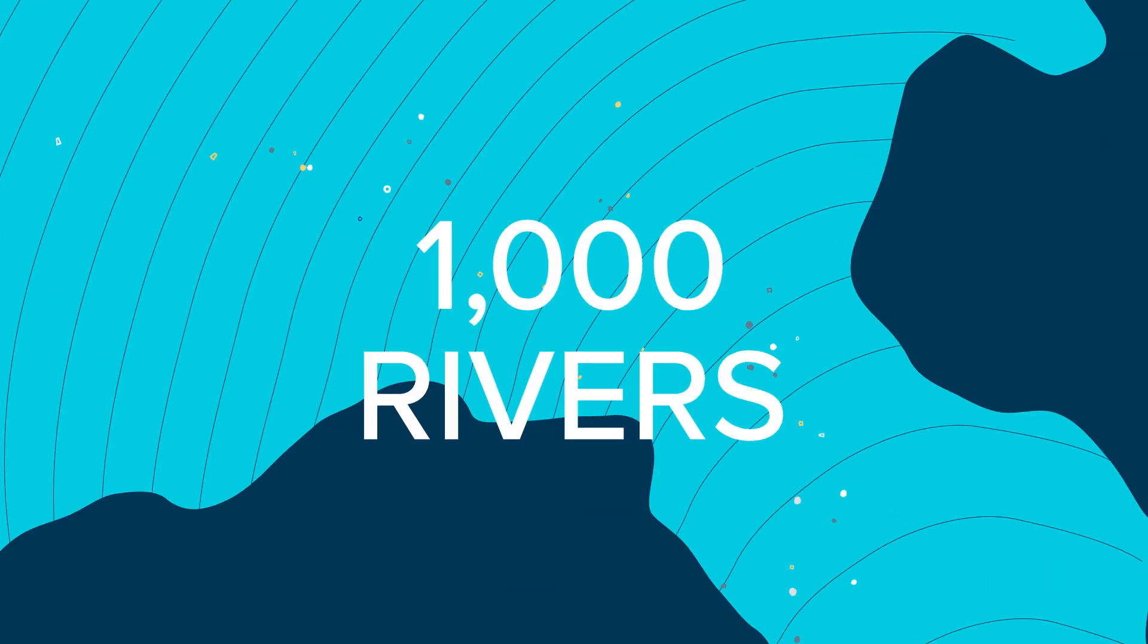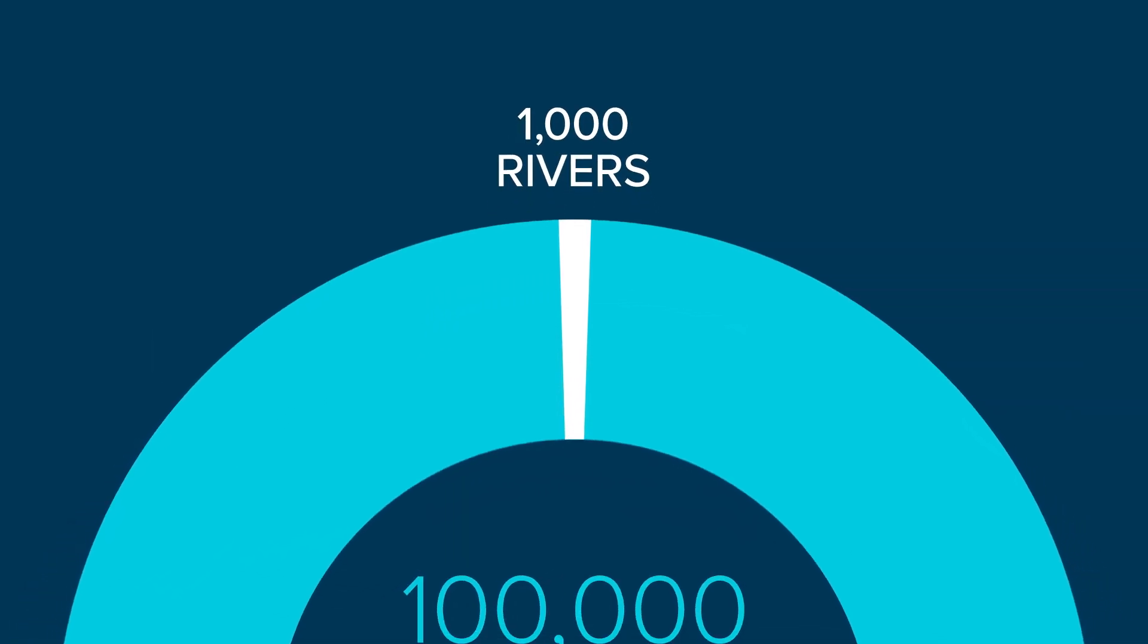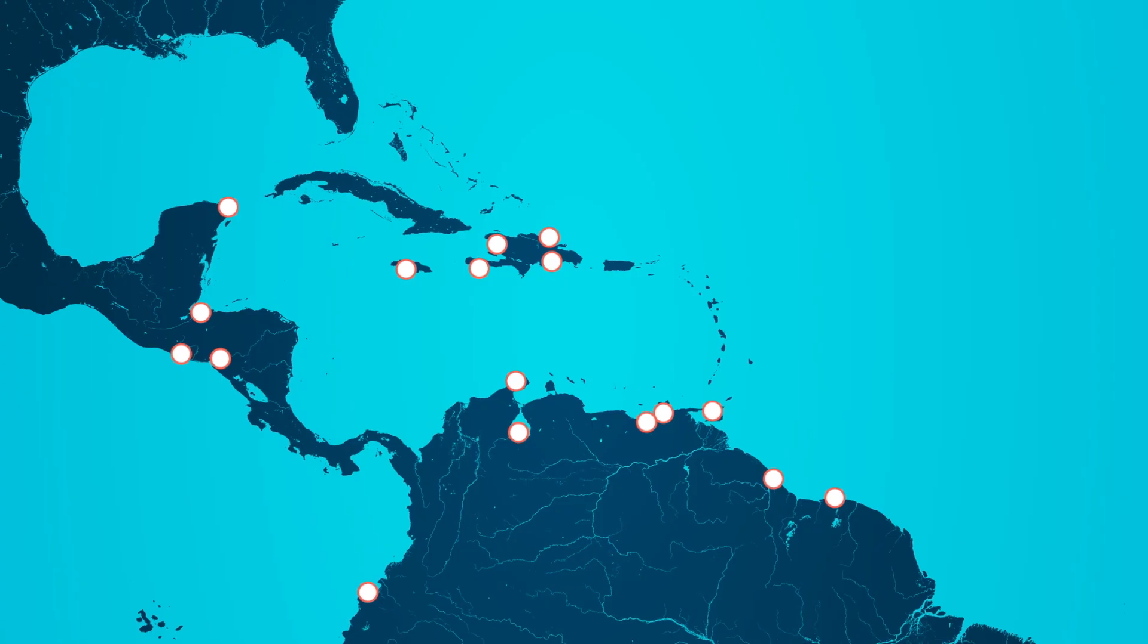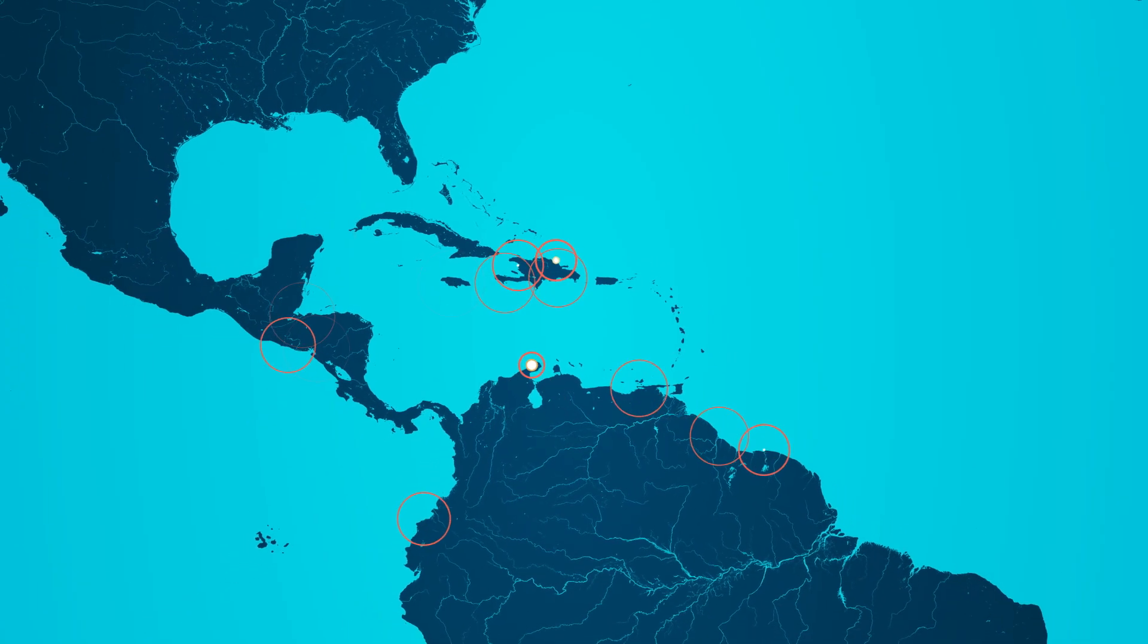While the number of 1,000 rivers may seem immense, this is only 1% of all rivers included in the study. This means that a targeted approach could drastically reduce the world's river plastic emissions.